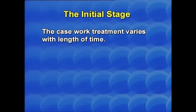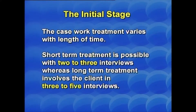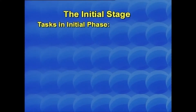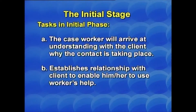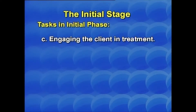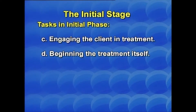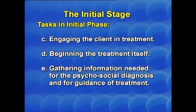In the initial stage, casework treatment varies in length of time. Short-term treatment is possible with 2 to 3 interviews, whereas long-term treatment involves the client in 3 to 5 interviews. Tasks in the initial phase include: the caseworker arriving at an understanding with the client about why the contact is taking place, establishing a relationship with the client to enable him or her to use the worker's help, engaging the client in effective treatment, and gathering information needed for the psychosocial diagnosis and guidance of treatment.